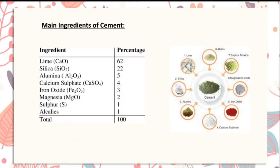Main ingredients of cement: the ingredients used for making cement are lime (CaO) 62–22%, silica (SiO₂) 22%, alumina (Al₂O₃) 5%, calcium sulfate 4%, iron oxide 3%, magnesia 2%, sulfur 1%, and alkalis 1%.